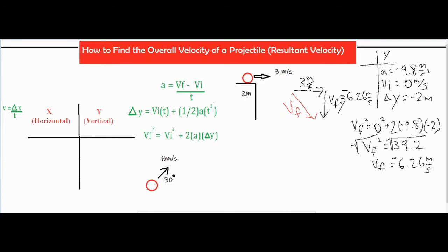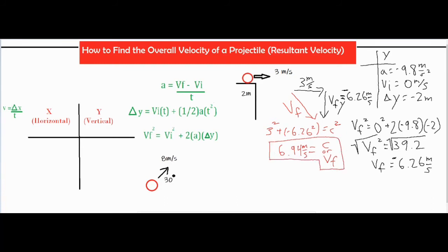Now we're almost done finding the overall final velocity. We just use the Pythagorean theorem because I want the hypotenuse of my triangle and I know the two other sides. I set it up as a squared plus b squared equals c squared. I squared both values, added them up, square-rooted both sides, and found a final velocity of 6.94 meters per second.